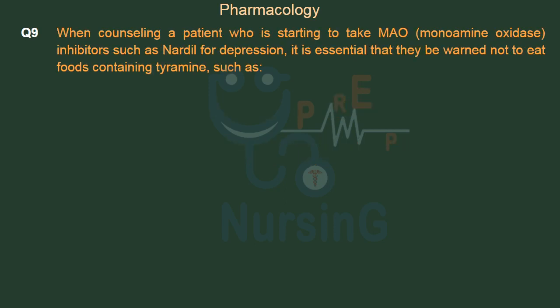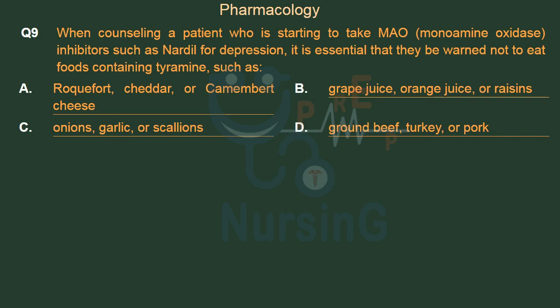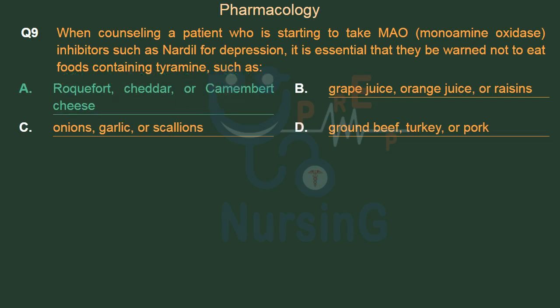When counseling a patient who is starting to take MAO (monoamine oxidase) inhibitors such as Nardil for depression, it is essential that they be warned not to eat foods containing tyramine, such as — Option A: Roquefort, cheddar, or camembert cheese. Option B: Grape juice, orange juice, or raisins. Option C: Onions, garlic, or scallions. Option D: Ground beef, turkey, or pork. The right answer is Option A — Roquefort, cheddar, or camembert cheese.